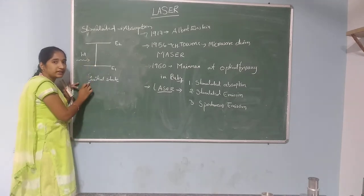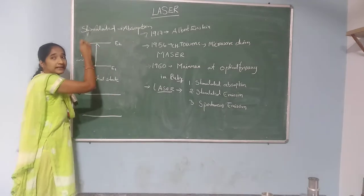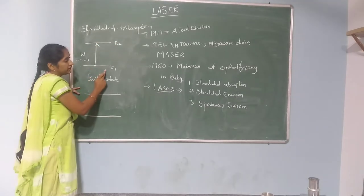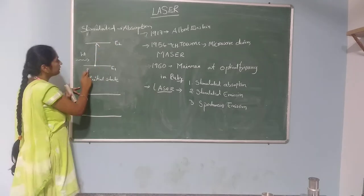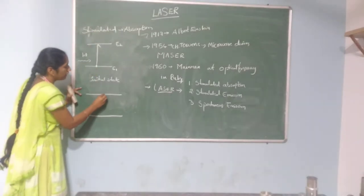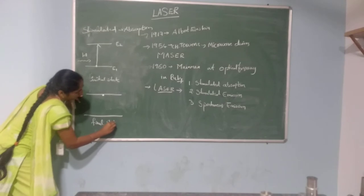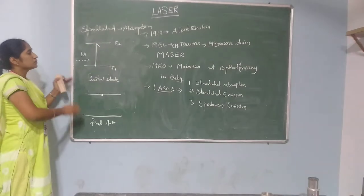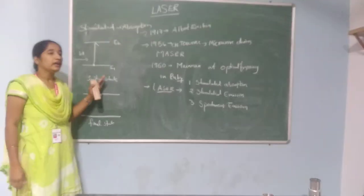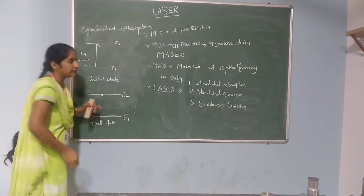The atoms absorb the H-nu energy and get excited to the higher level E2. This is the final state in stimulated absorption — atoms move from the ground level E1 to the excited higher energy level E2.